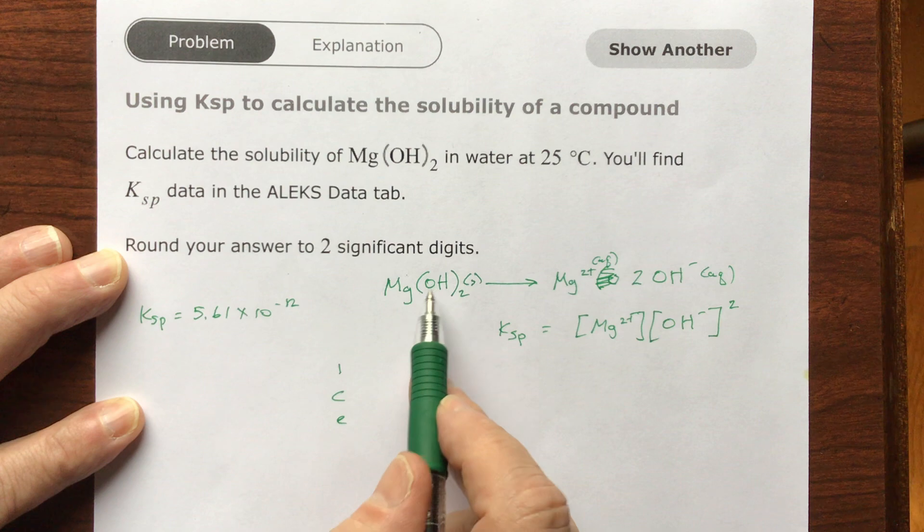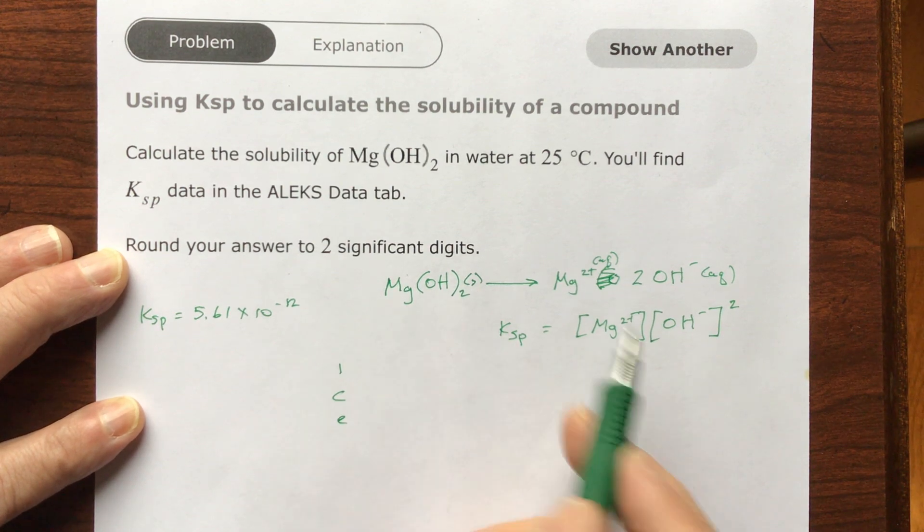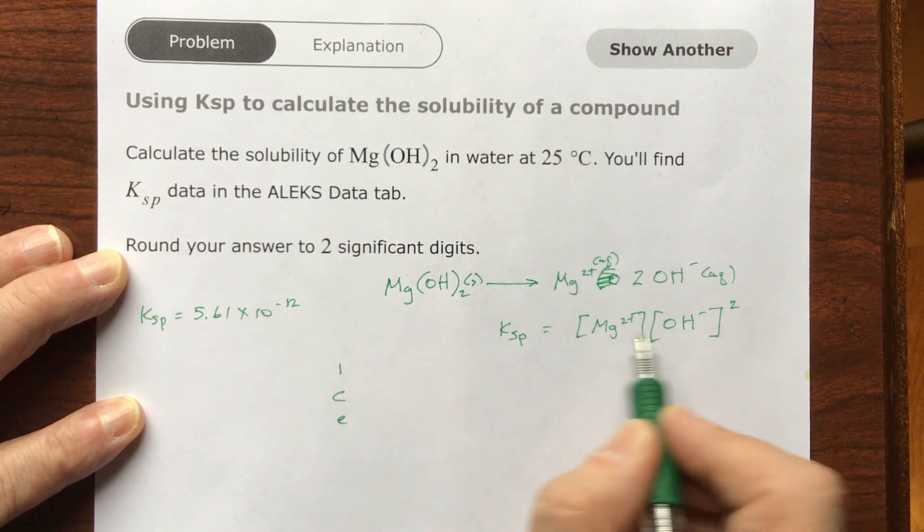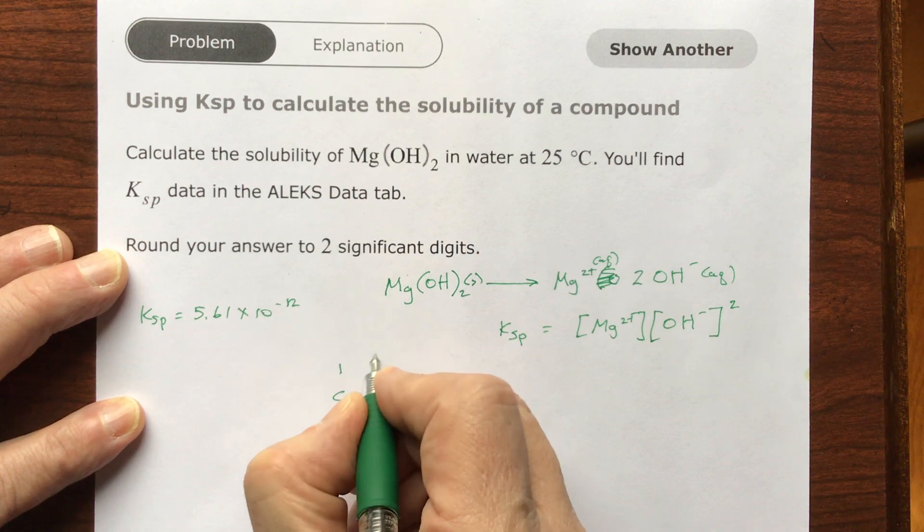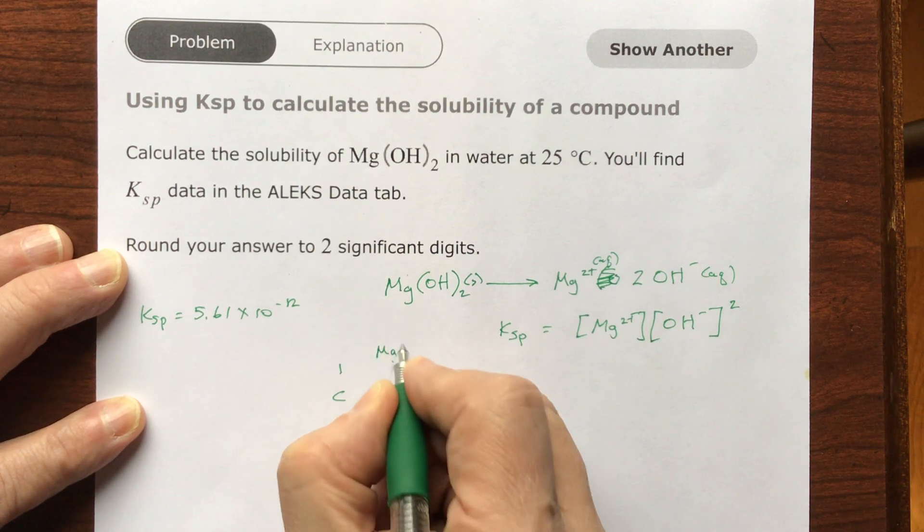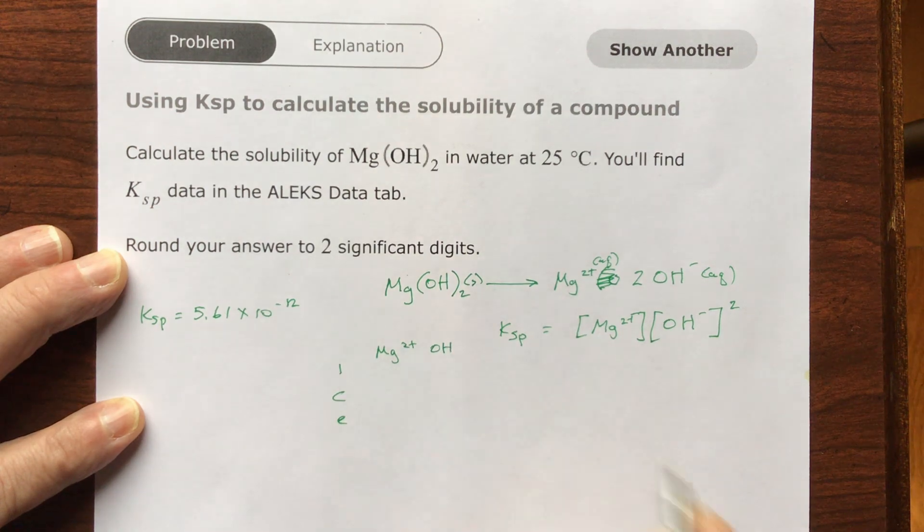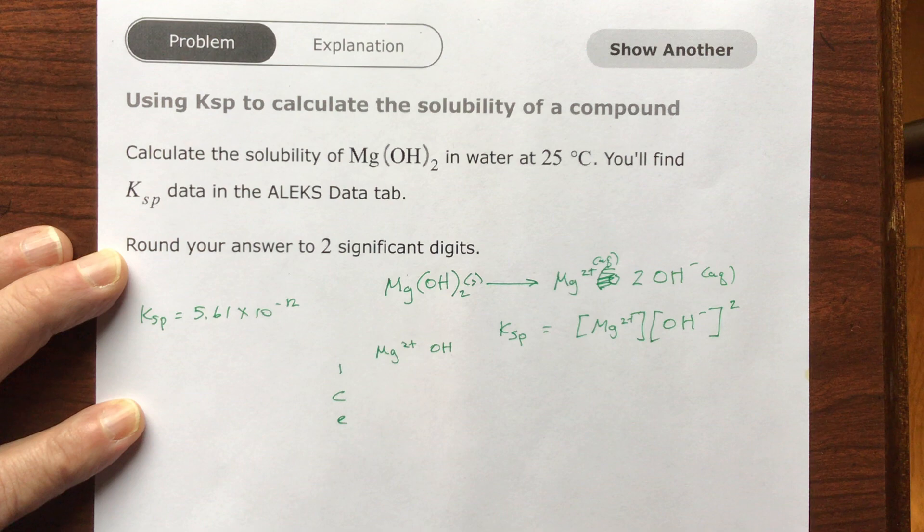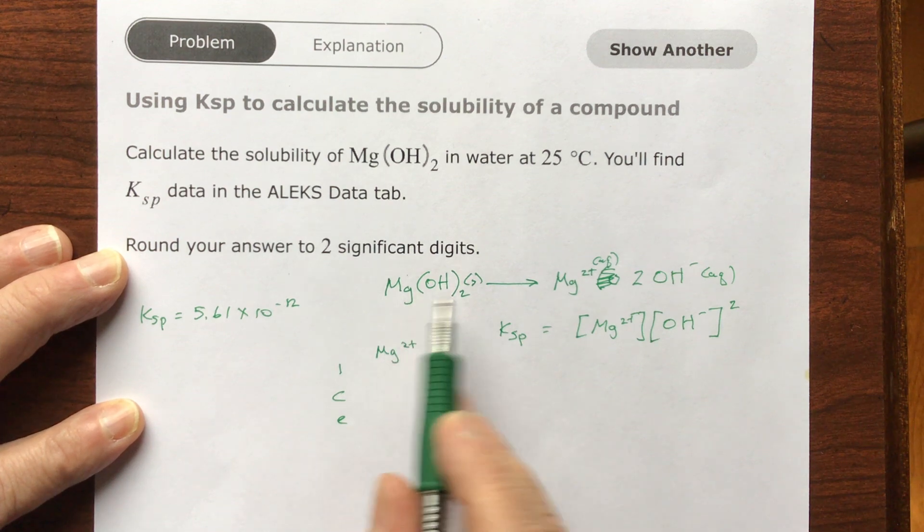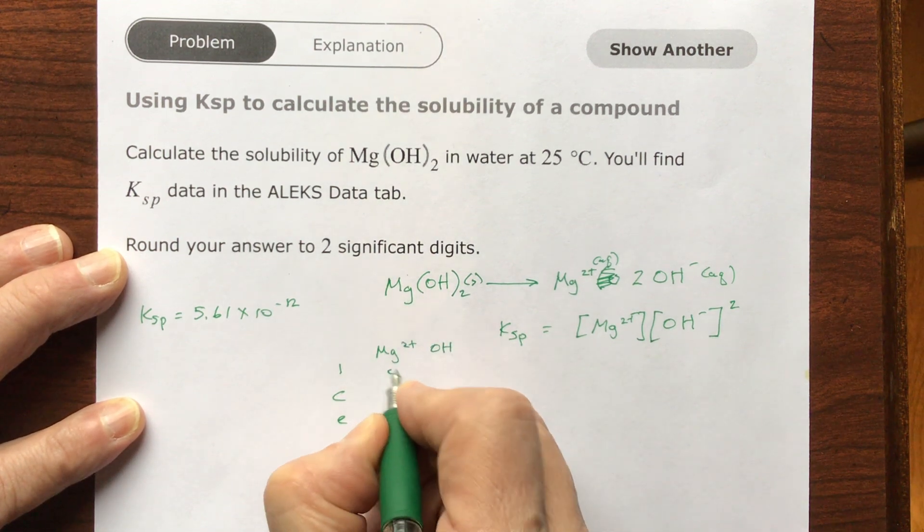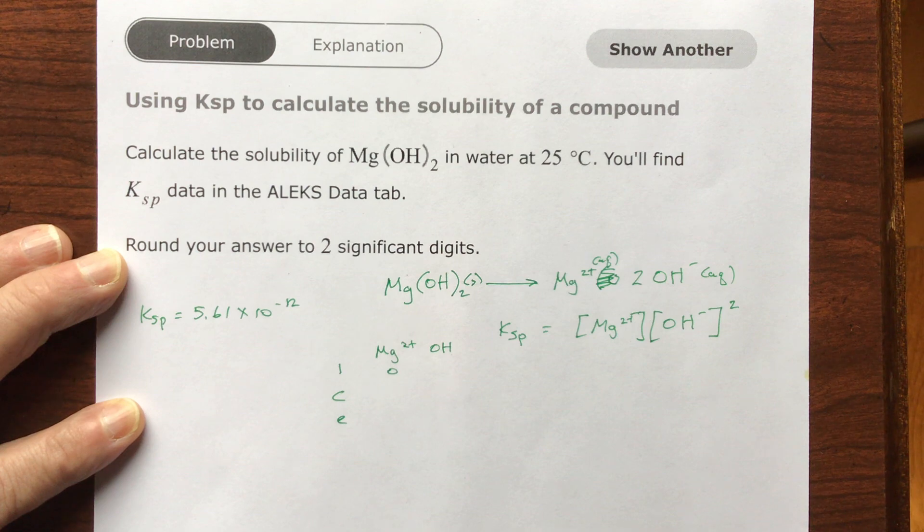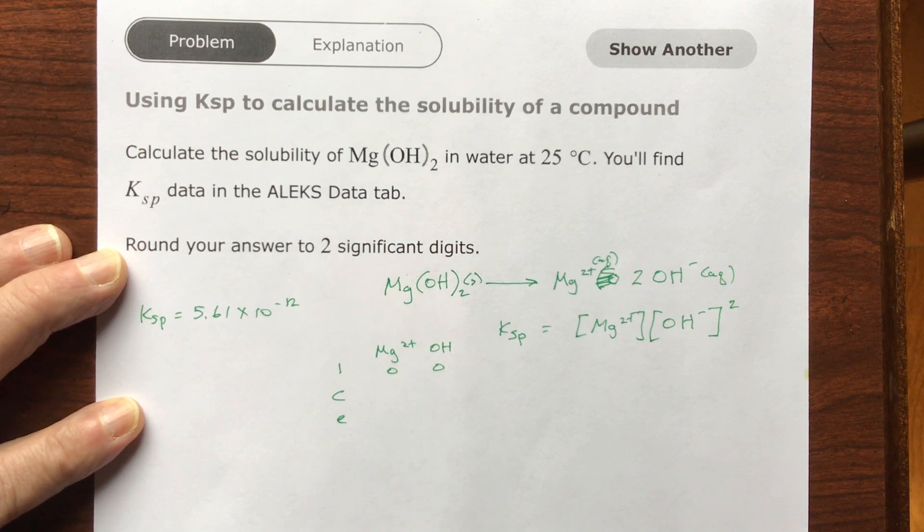So I'm going to ignore this because it's solid, it's not going to participate, but I am going to use these two, so I'm going to say the first one is magnesium 2 plus, and the second one is going to be hydroxide. So at the beginning, initially, what's my concentration? Well, the second that I put this powder in, I'm going to have no molar, zero molar concentration of magnesium and zero concentration of the hydroxide as well.